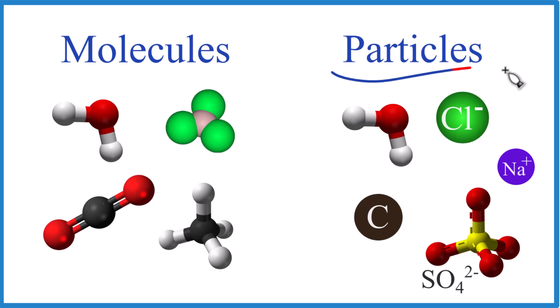So particle is kind of a more general term. We'll use it a lot in stoichiometry when they say convert moles of something to particles. When we say particles, we just mean molecules, ions, or elements, single elements. So that's the big difference. So you'll see that a lot in stoichiometry and other places.